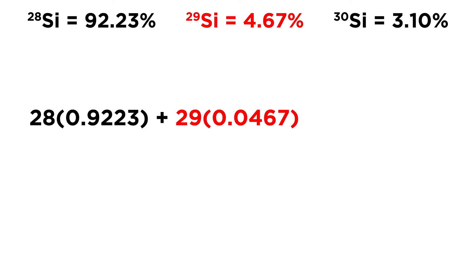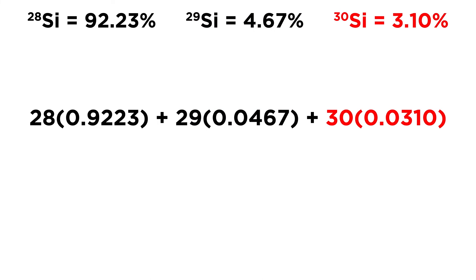To that we add 29 — the mass number of Silicon-29 — multiplied by 0.0467, which is 4.67% as a decimal. And lastly, we have 30 for the mass number of Silicon-30, multiplied by 0.0310, which is 3.10%. Now all we need to do is add these up.